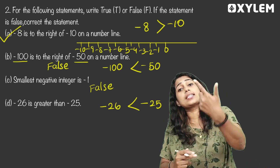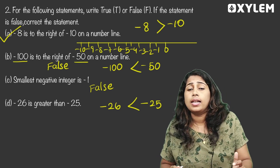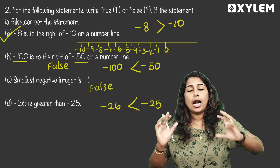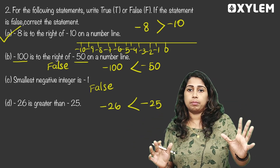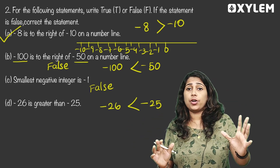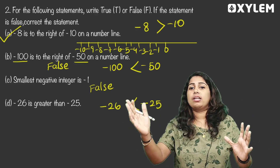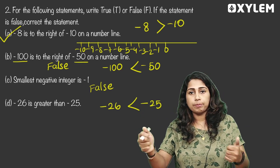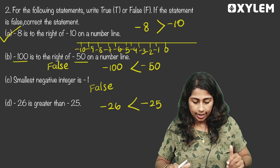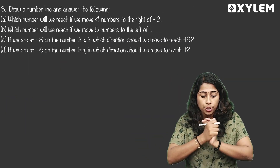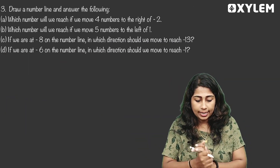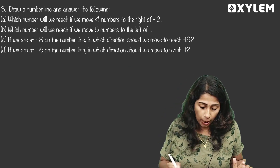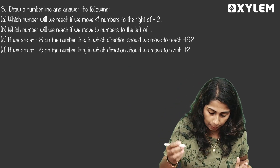The correction: negative 25 is greater than negative 26. Now, the next question: Draw a number line and answer the following. We have drawn a number line. Which number will we reach if we move four numbers to the right of negative 2?